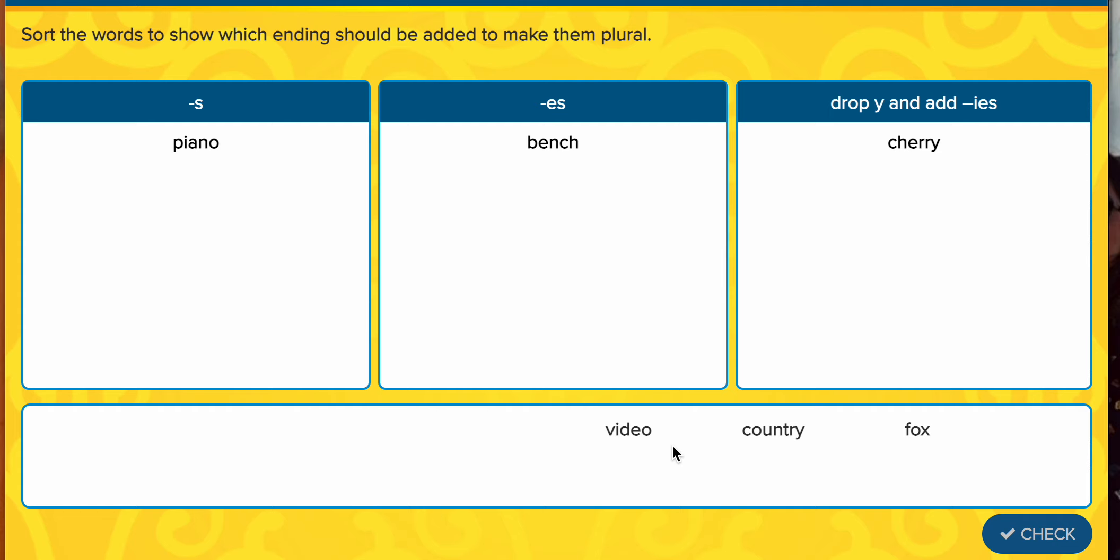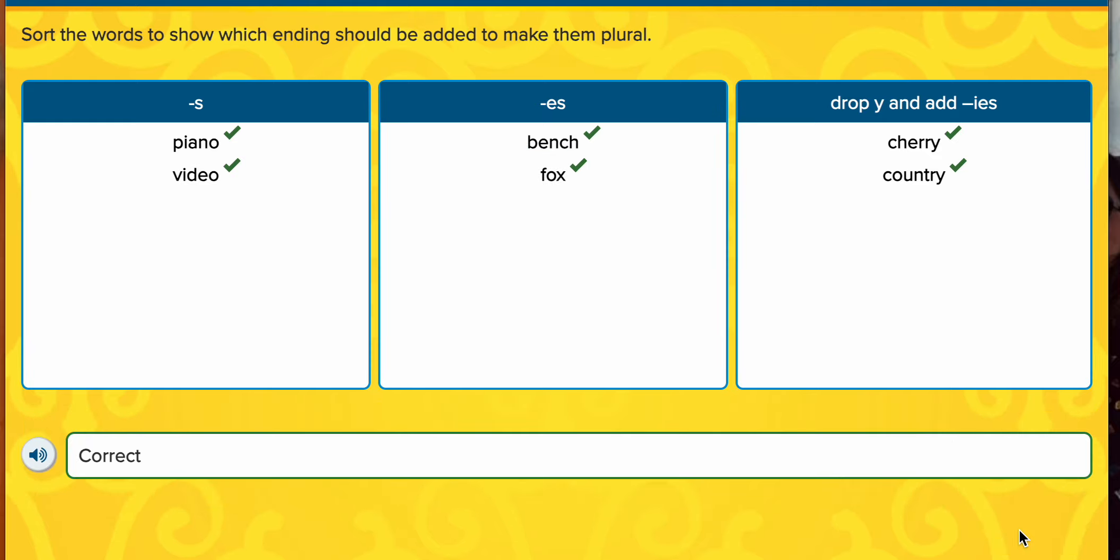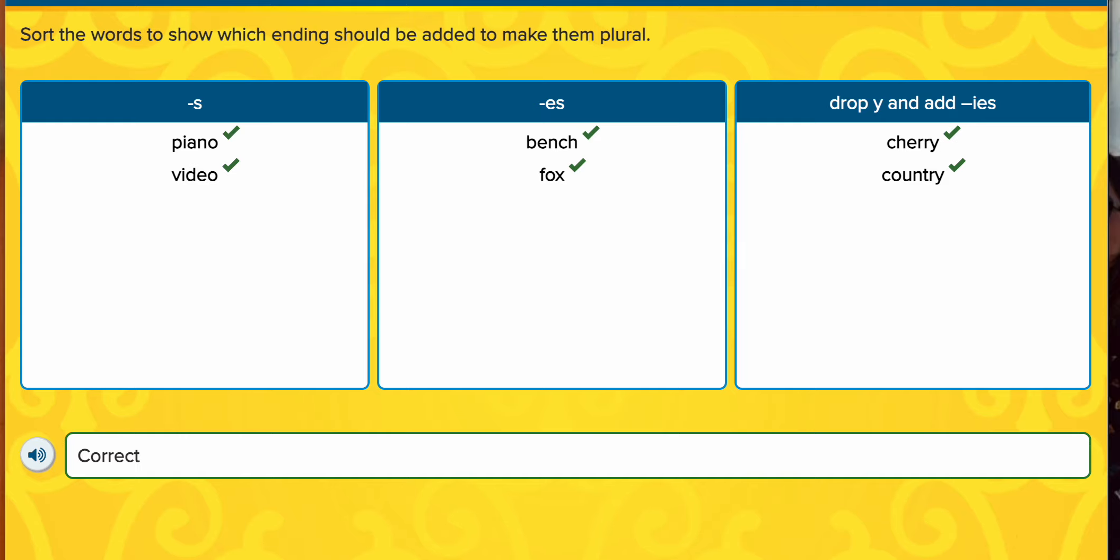Video, v, i, d, e, o. Video. Doesn't have a hissing sound. Doesn't end in a y. I think I just have to add the s. Let's look at this next one. Country, country, country. Ends in a y. I got that key letter there at the end. So I know I'm going to get rid of the y and add the i, e, s. That's going there. And last but not least, fox, fox, fox. It has that sneaky sound at the end. So it's not just a regular s. I'm going to go with e, s. Let's check our work. Correct. 10 out of 10. I am a great third grade student.